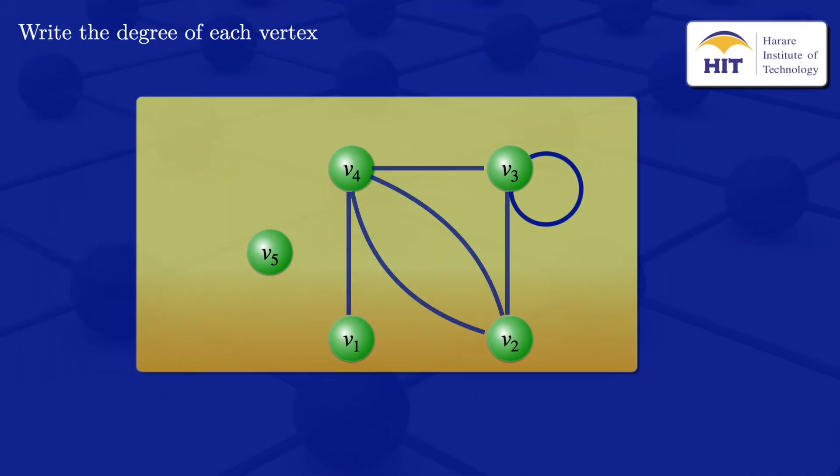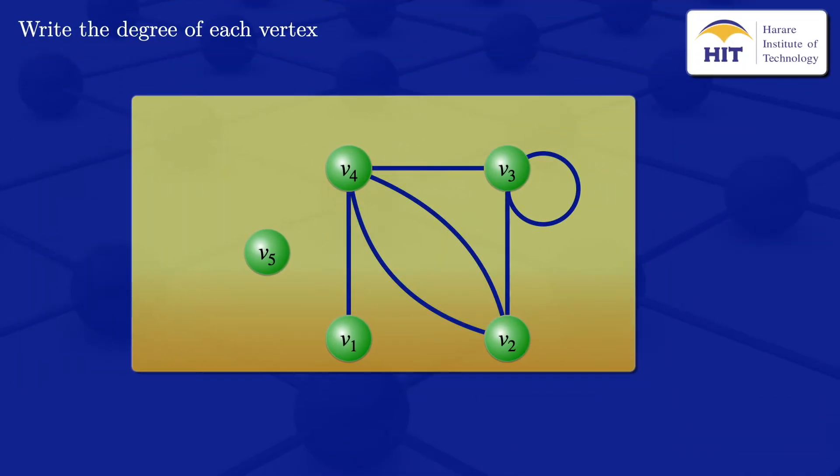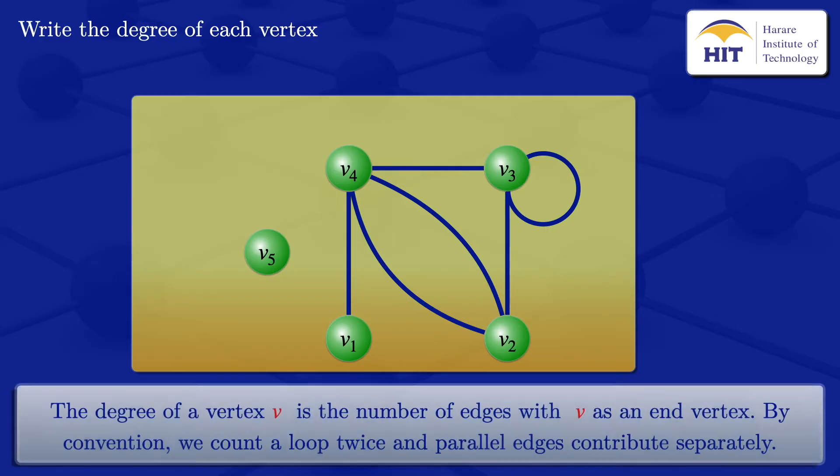To write the degree of each vertex, I'll start by looking at the definition of the degree of a vertex V. The degree of a vertex V is the number of edges with V as an end vertex.